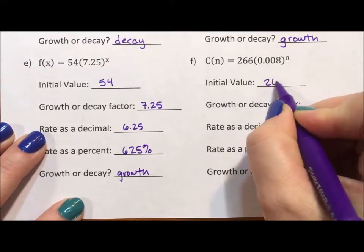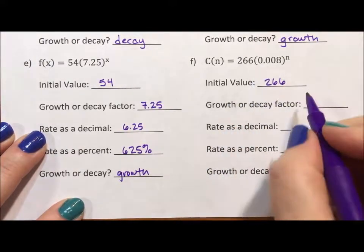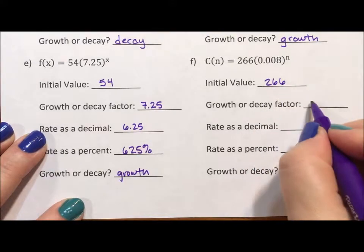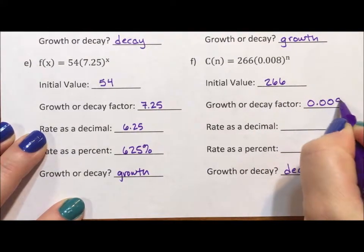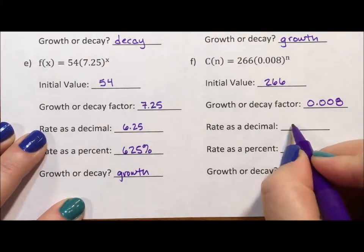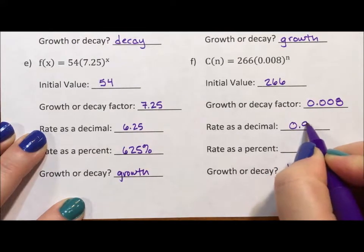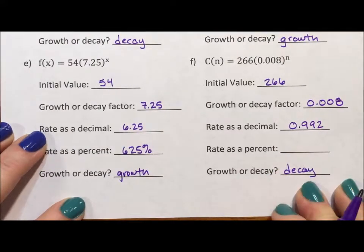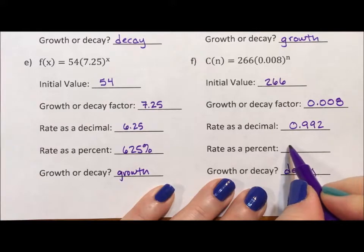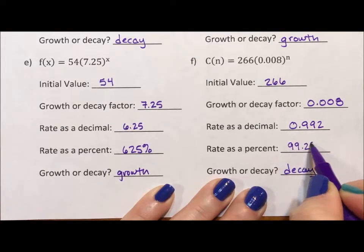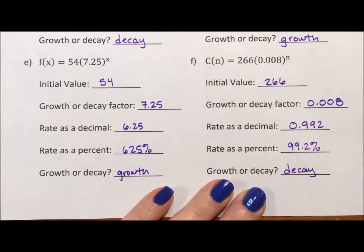Here, my initial value is 266. My growth or decay factor, decay, we figured that out already, is 0.008. Subtract 1 to get 0.992. And when we multiply this out to get a percent, we get a decay percent of 99.2%. All right, I hope you've enjoyed this video.